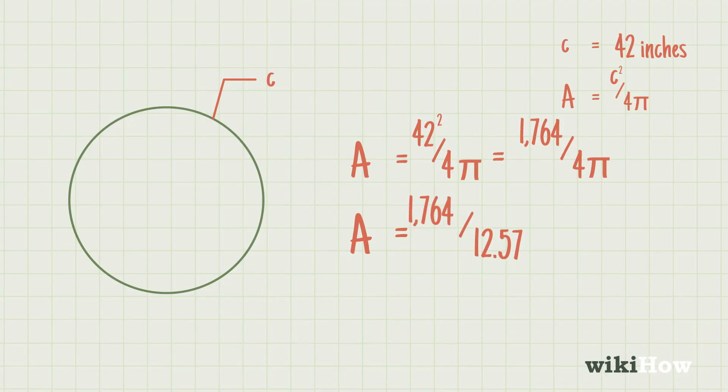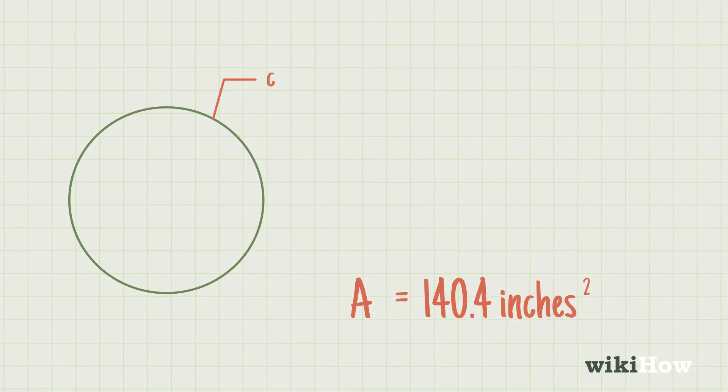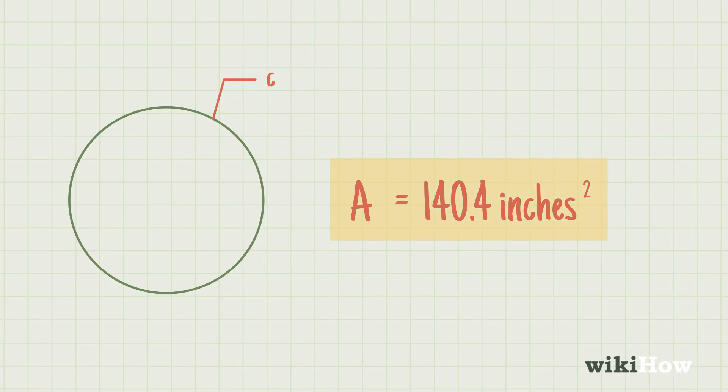Finally, you would divide 1764 by 12.57 and get 140.4. Therefore, the area of the circle is 140.4 square inches.